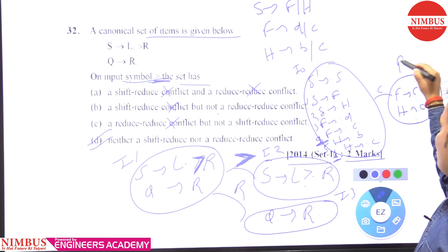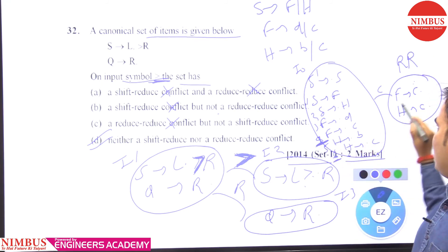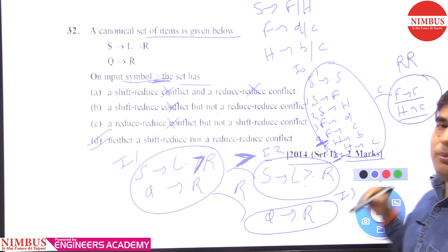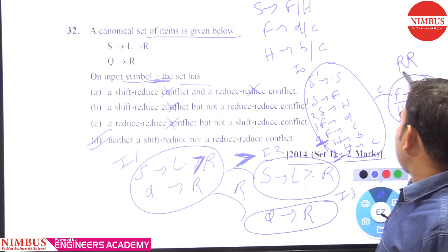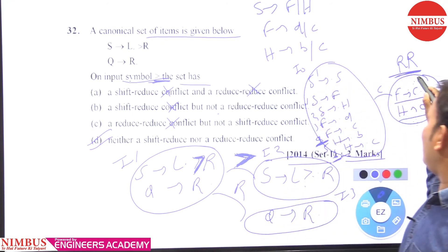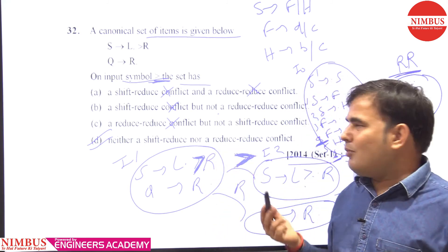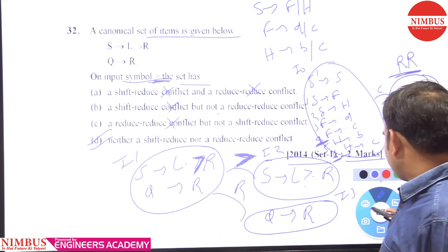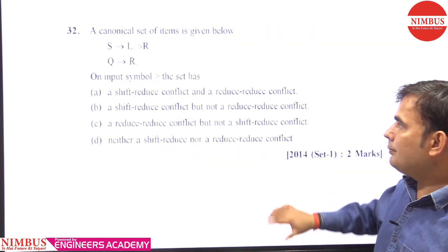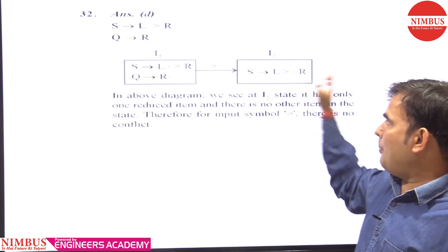This is a reduce-reduce conflict: the 4th numbered grammar and the 6th numbered grammar are both reducing in the same state of the canonical set of items. This concept is called reduce-reduce conflict. And as I explained in the previous question, this is what a shift-reduce conflict is. So here, option D is correct.